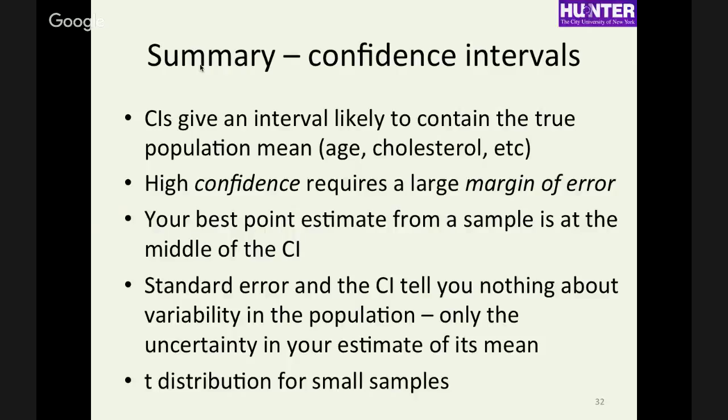Just to wrap up, so the confidence interval is an interval that is likely to contain the true population mean, and it represents our uncertainty due to sampling variation. If you want a high confidence, then you need a large margin of error to be more sure that you don't make a mistake, that that margin of error really does contain the true population mean. Your best estimate from the sample is at the middle of your confidence interval. The standard error and the confidence interval have to do with properties of the sampling distribution, so they don't tell you anything about variability in the population. They tell you about variability of the averages of samples. And when we have small samples, and we're estimating the standard deviation from the sample, use the T-distribution.